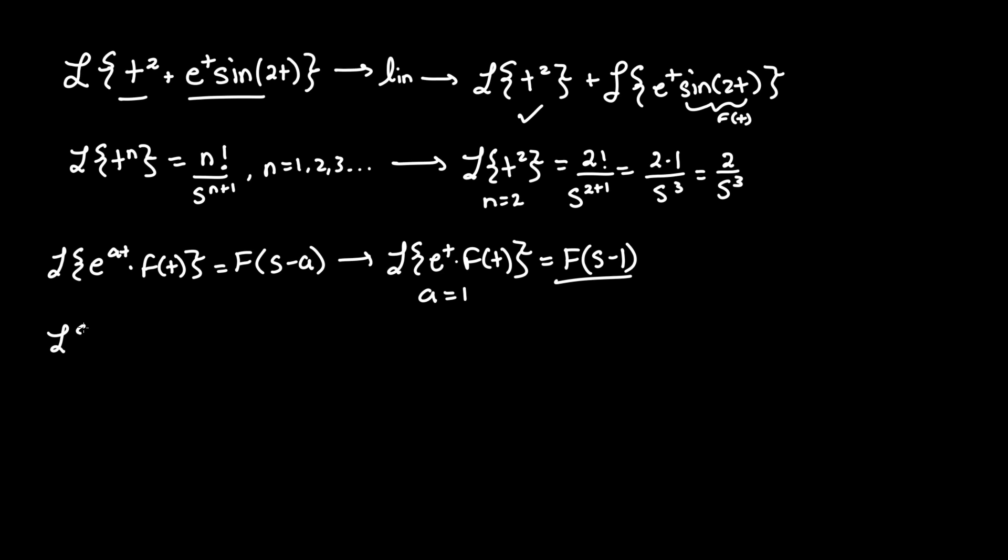So we know that from our table again, Laplace of sine bt, where b is another constant, that'll equal b over s squared plus b squared. So for our problem, Laplace of sine 2t implies that b equals 2.